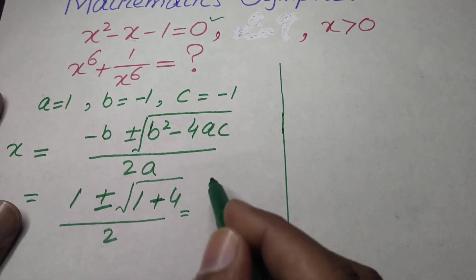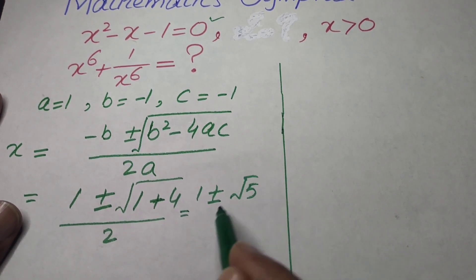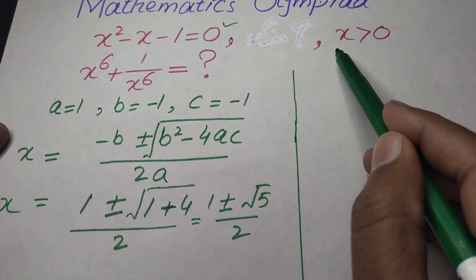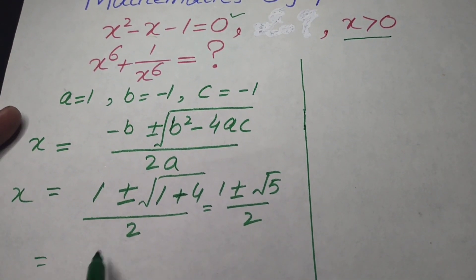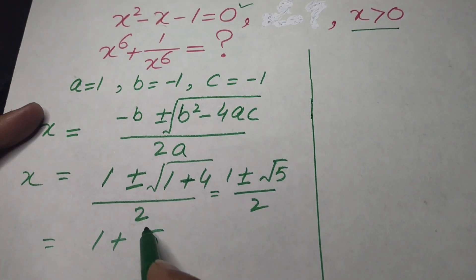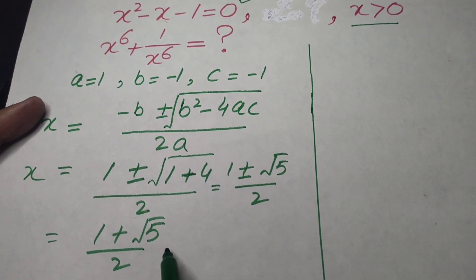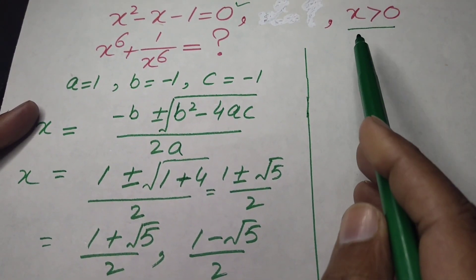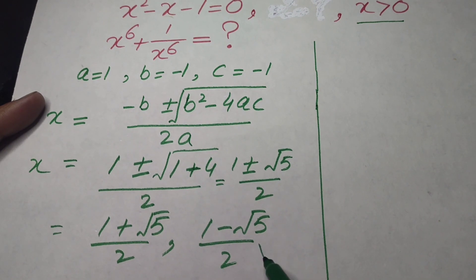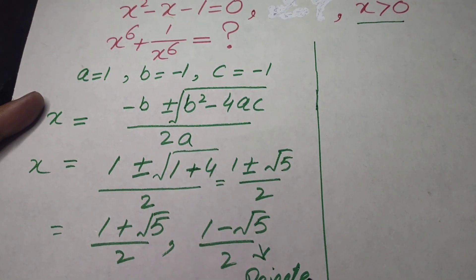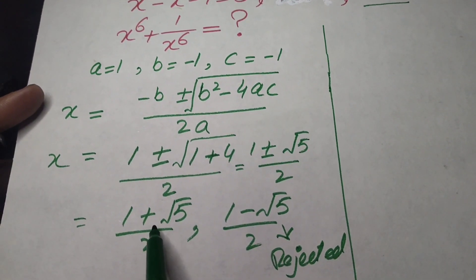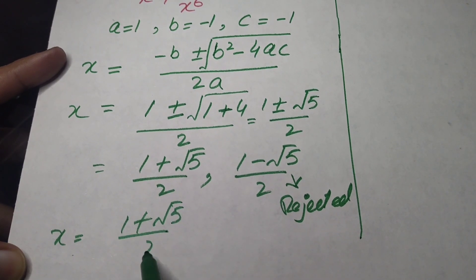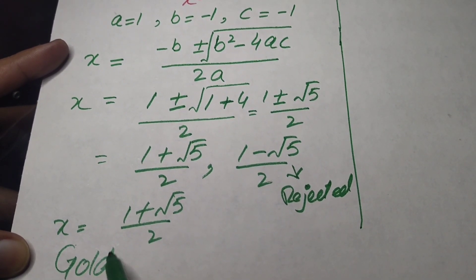After simplifying, we obtain two values: x = (1 + √5) / 2 and x = (1 − √5) / 2. Because x must be positive, we reject the negative term and take x = (1 + √5) / 2. This value is known as the golden ratio.